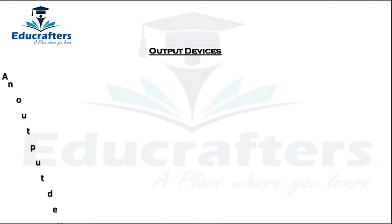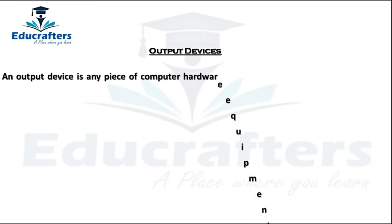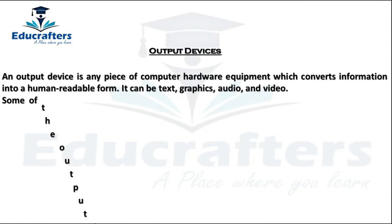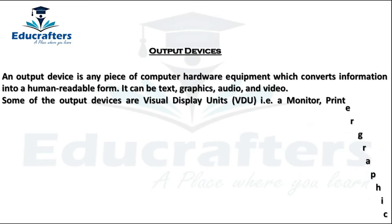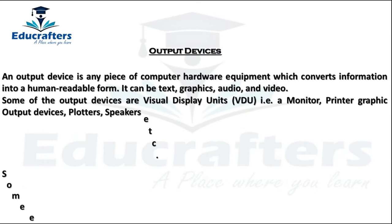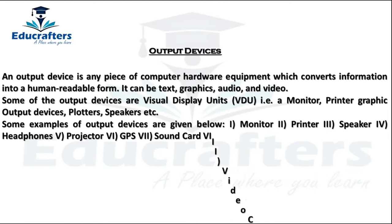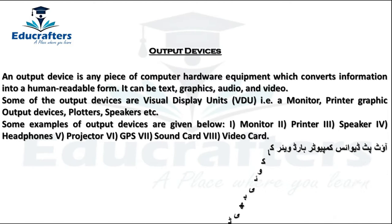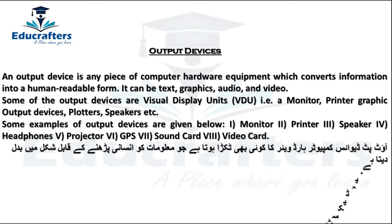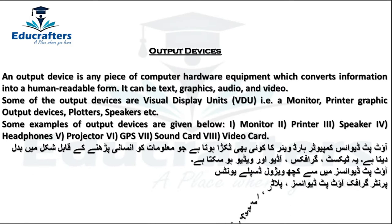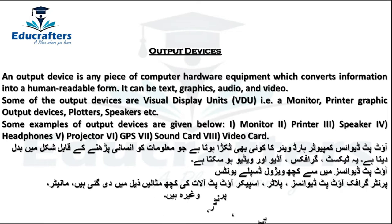Now we are going to start output devices. An output device is any piece of computer hardware equipment which converts information into a human-readable form. It can be text, graphic, audio, and video. Some of the output devices are visual display units — for example, a monitor, printer, graphic output devices, plotters, and speakers.